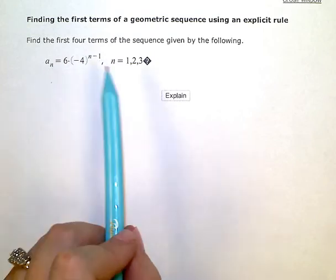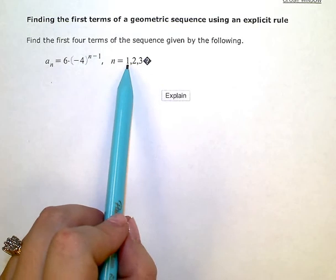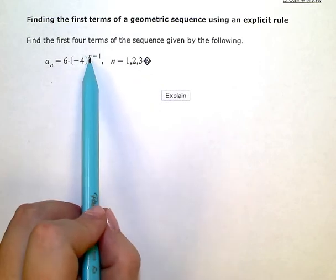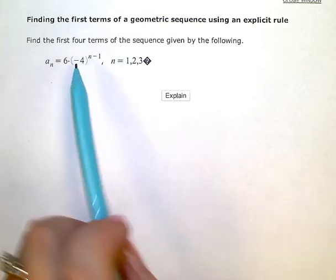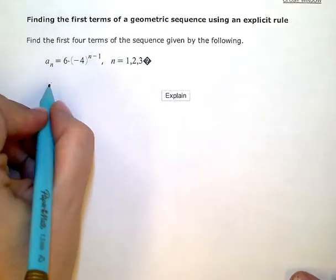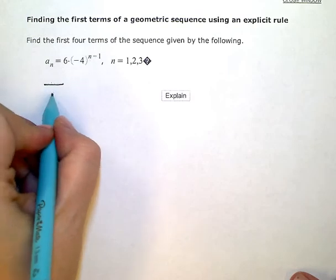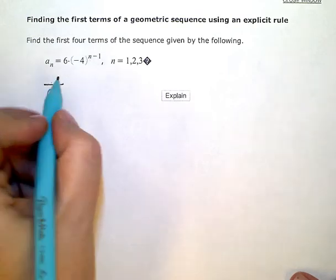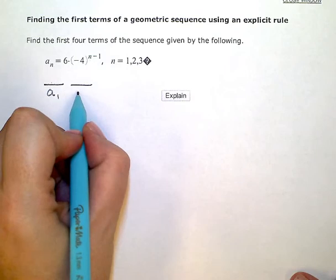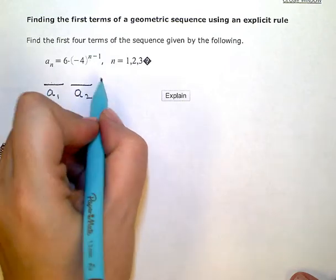I could substitute in 1, 2, 3, and 4 up here for n and then evaluate. But really the easiest way to get this done is just to look at the information that's in the formula itself for me.